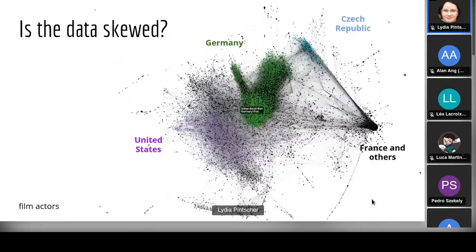Is the data skewed? It looks to me like the film data is skewed — no offense to Germany, but Germany seems overrepresented in the film data, while very big movie industries like India's don't seem to be well represented. This is based on color-coding this graph, and there's a KGTK command that produces this graph. This is an observation about things we need to think about when reusing data.